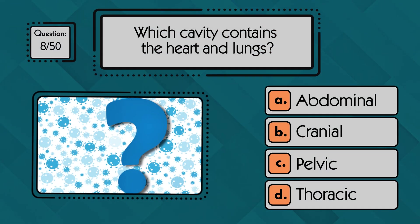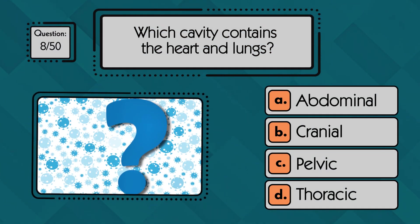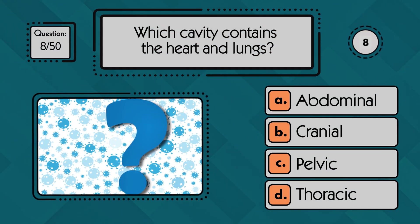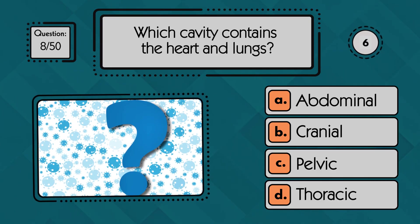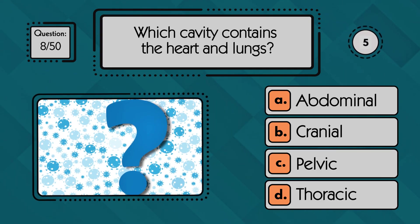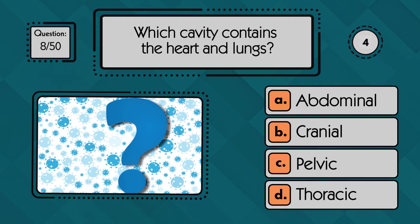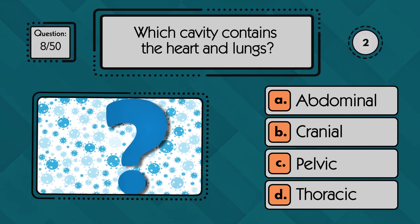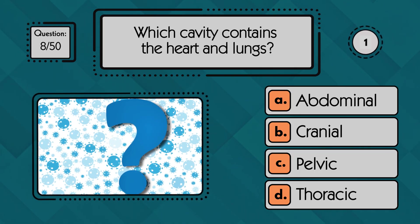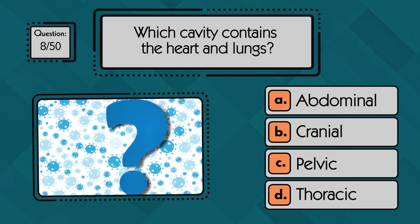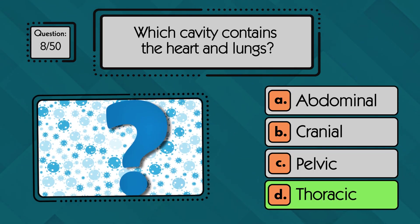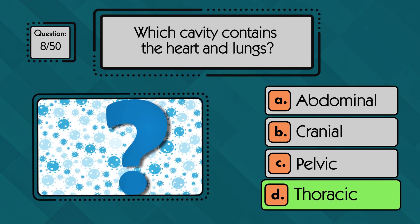Which cavity contains the heart and lungs? The heart and lungs sit within the thoracic cavity.